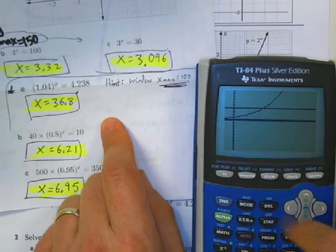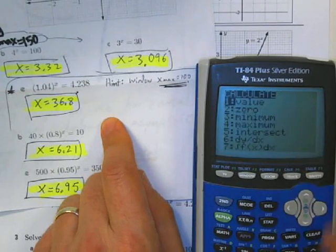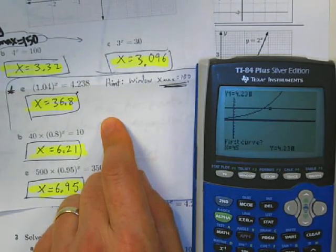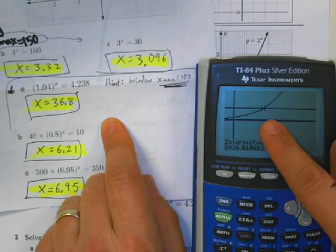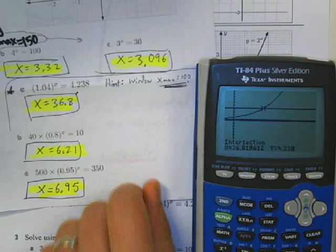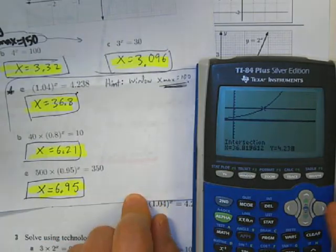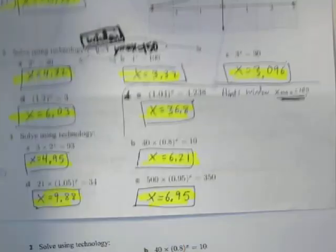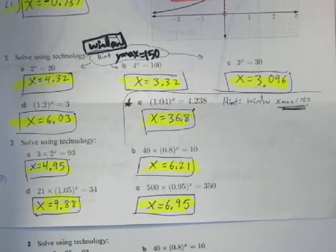So now I can do the second trace, 5, enter, enter, enter, and now I've got my answer that x is 36.8. That's about all you need to do these problems. Here are the answers, check them, and good luck with the assignment.